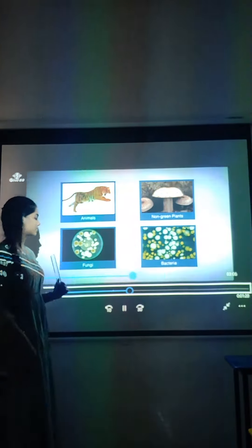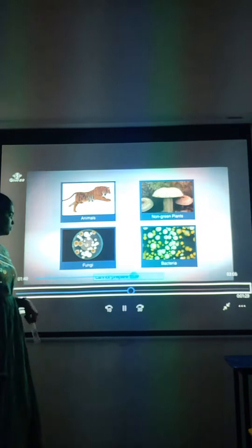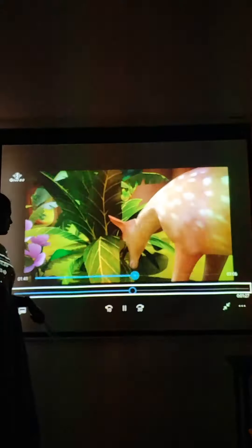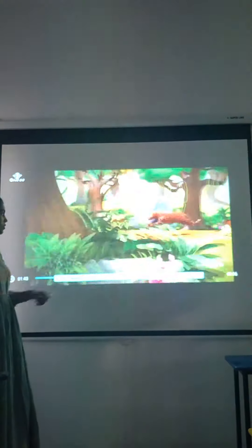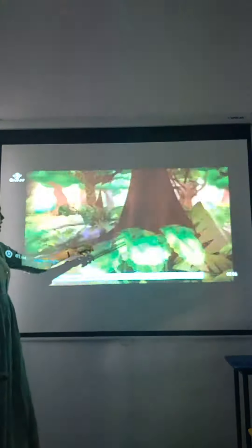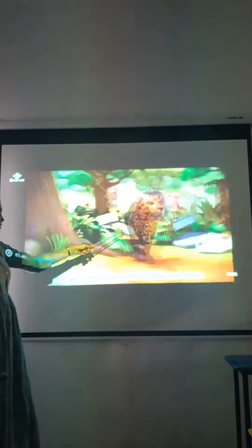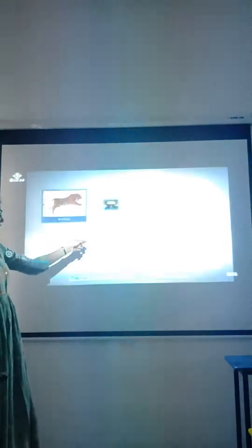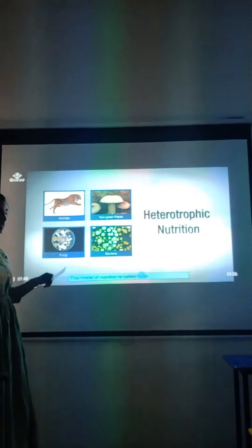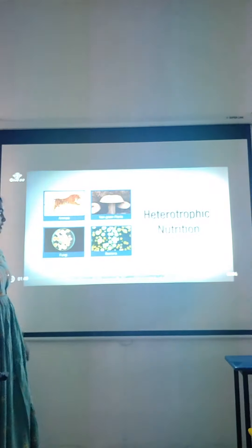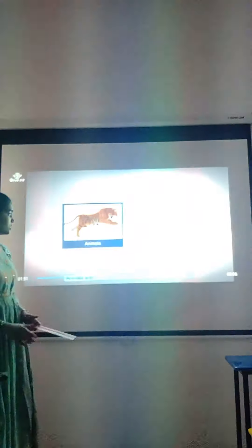Now let us see. Animals can't prepare their own food. They depend on someone. Deer is eating grass and the tiger is eating that deer. So they are heterotrophic nutrients.